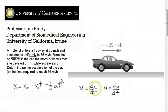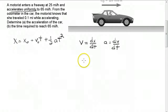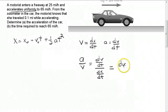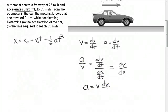Now I want to quickly calculate a useful expression for this problem. Let's divide A by V. We write the acceleration divided by the velocity as dv/dt divided by dx/dt. Cancelling out the dt's, this gives us a/v = dv/dx. So this relationship is particularly useful in this problem: A equals V times dv/dx.